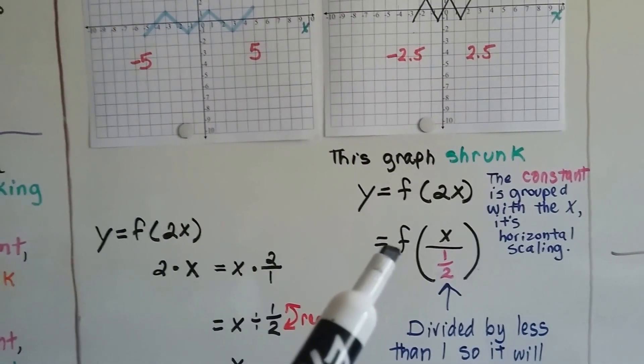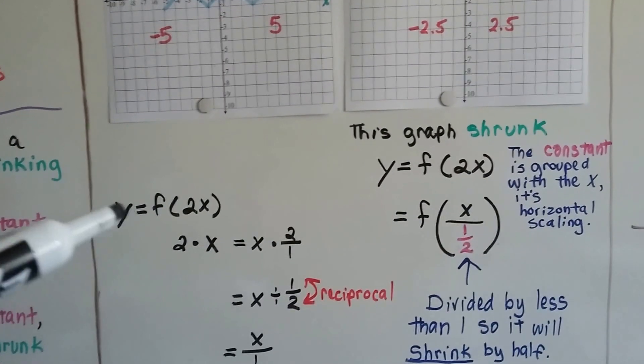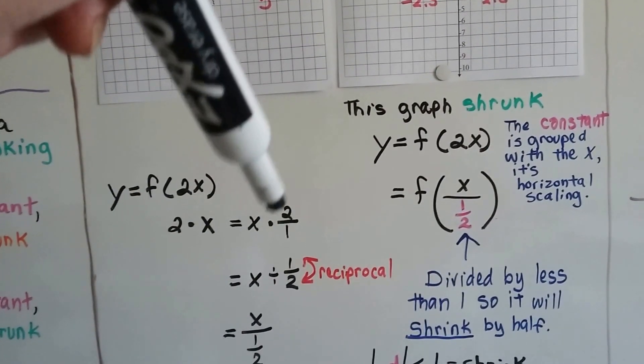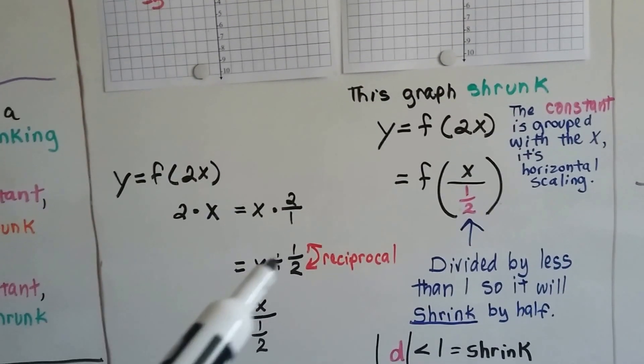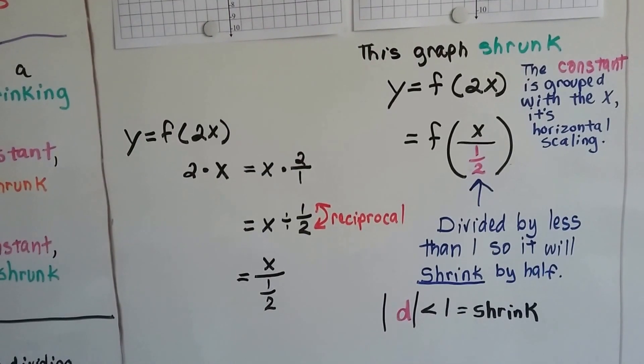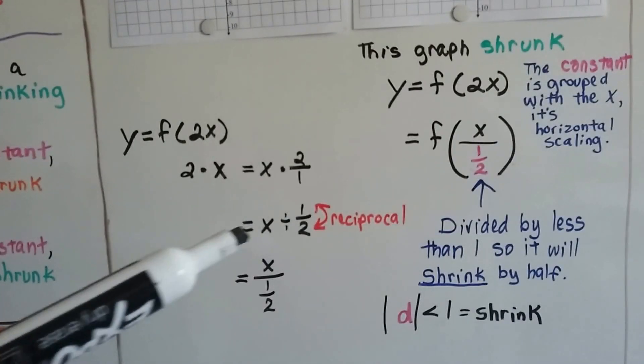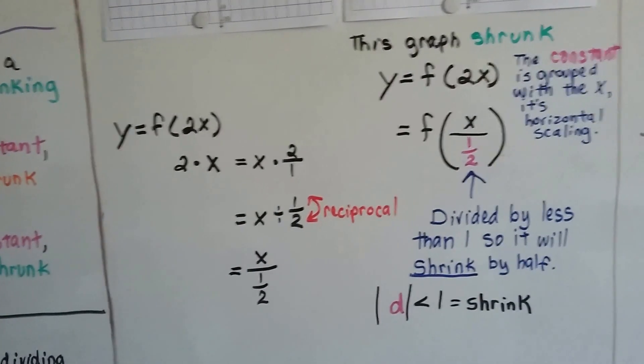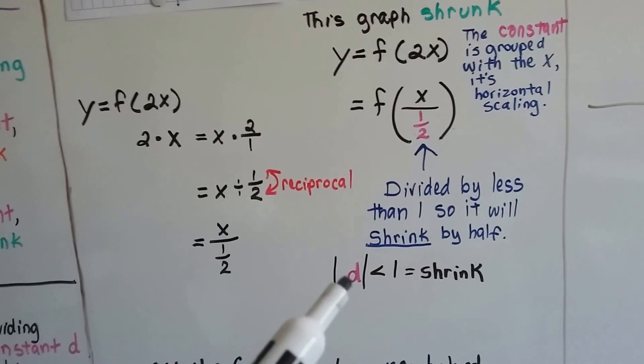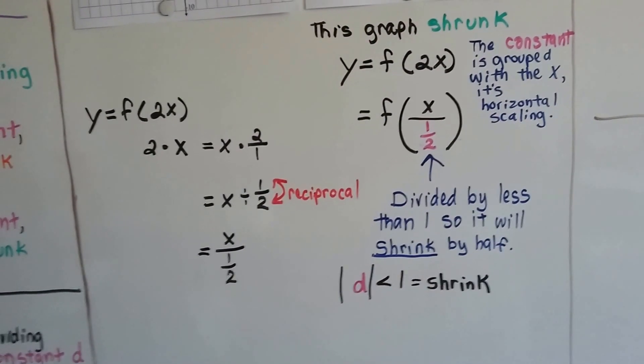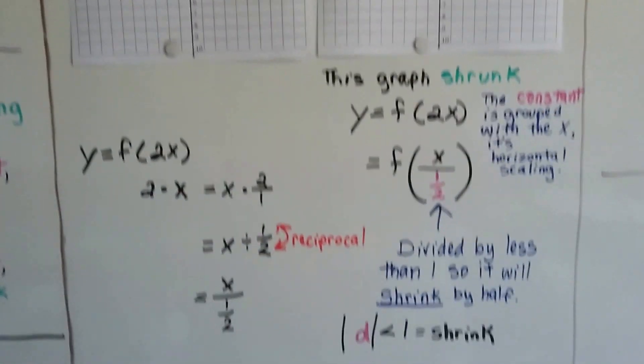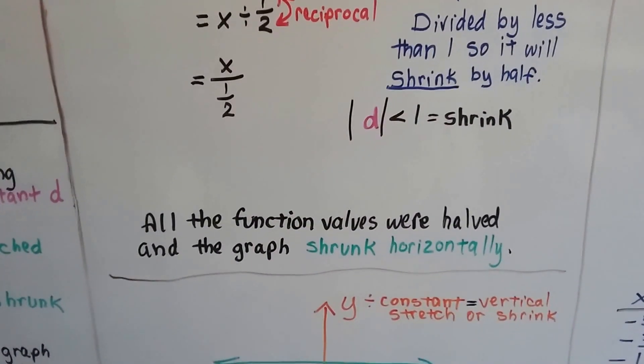Now, we can rewrite it as x divided by a half. So what's happening here is, we've got 2x. That's 2 times x. We can also say it's x times 2 over 1. It's the same thing. When we divide, we flip it around to its reciprocal. So that would give us x divided by a half, because fractions are just little division problems. So that's how they got the x divided by half. We're just flipping it around from multiplication to its reciprocal. Now, it's divided by less than 1, so it's going to shrink by half. That theorem said that if the absolute value of d is less than 1, it shrinks horizontally. So we know this one's going to shrink, and it did, by half. All the function values were halved, and the graph shrunk horizontally.